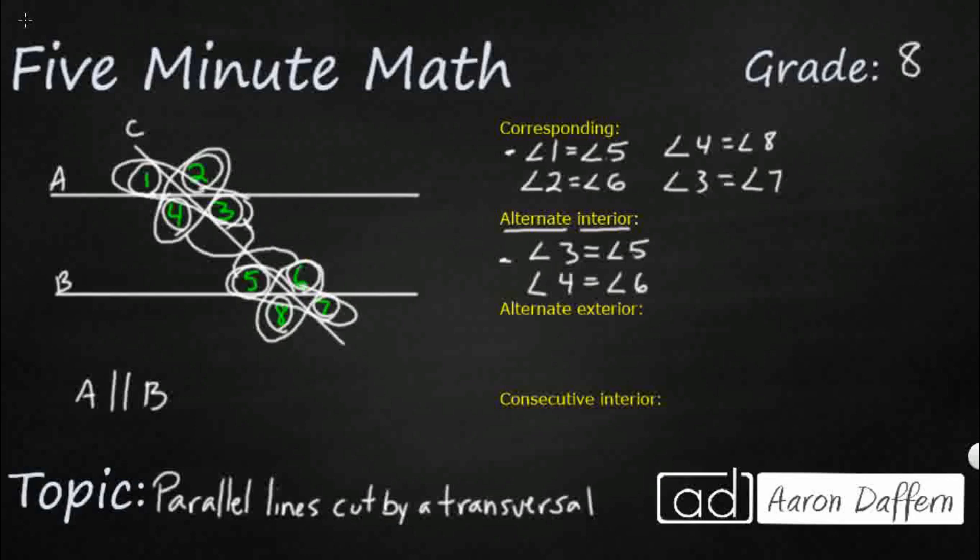Let's look at alternate exterior. So alternate means we're going on either side of that transversal. Exterior means we're going on the outside of those parallel lines. So this is where it gets a little bit interesting. So I'm going to put a star there since we're getting a little bit crowded. Angle 2 up here is actually going to be equal to angle 8. So the alternate exterior, both of those angles are going to be the same. And then you've got this angle 1 that's on the exterior of that parallel line equal to angle 7.